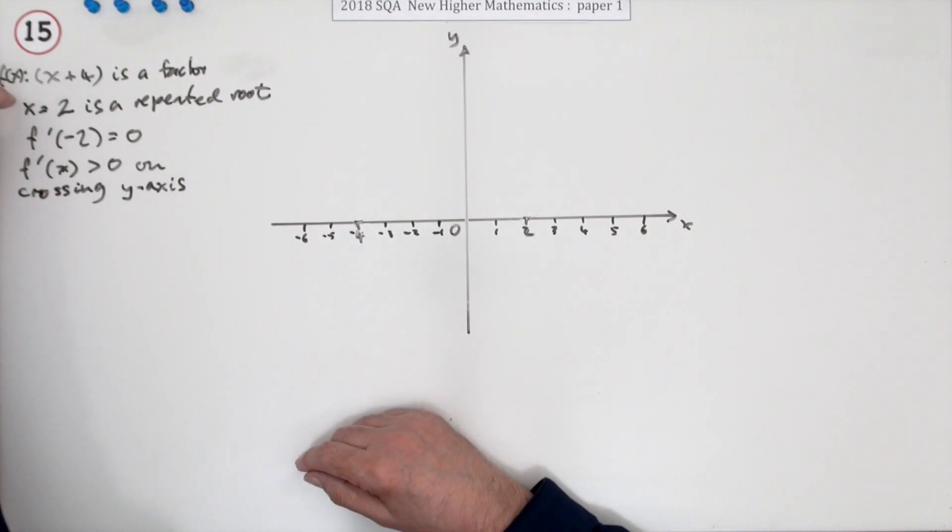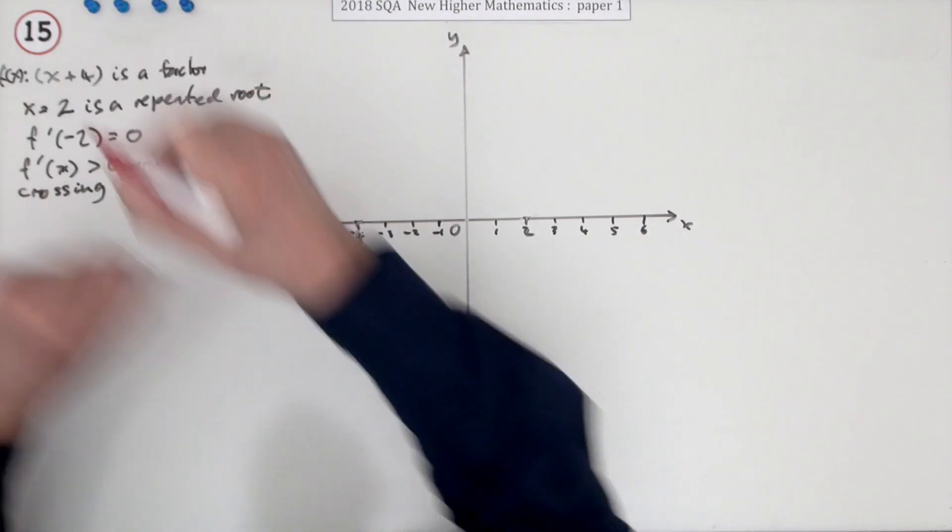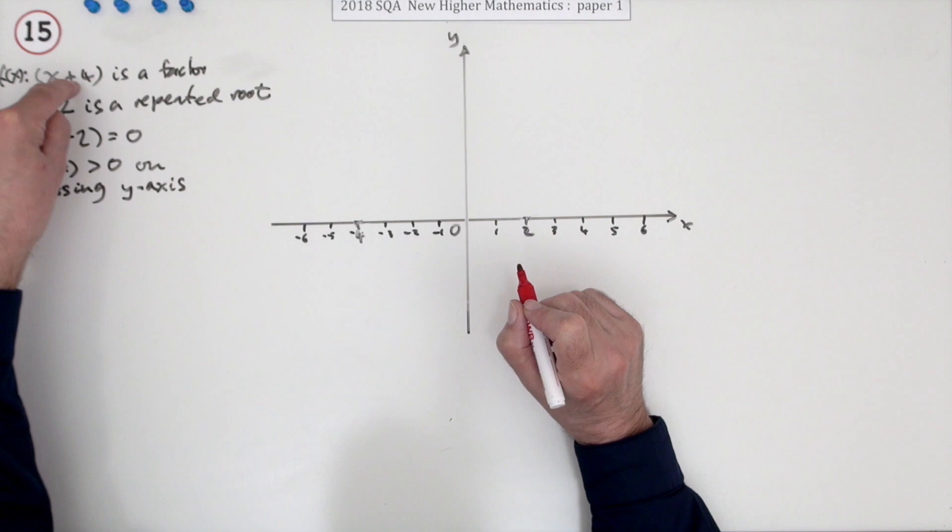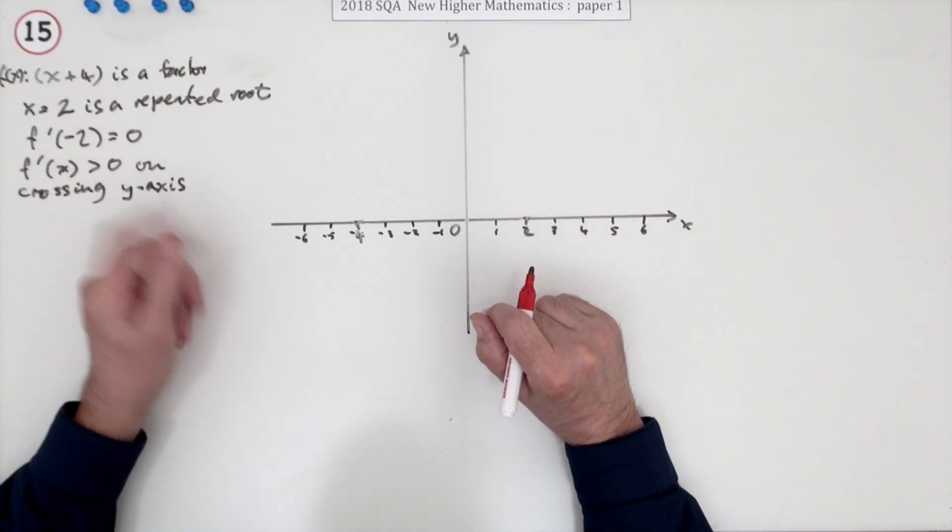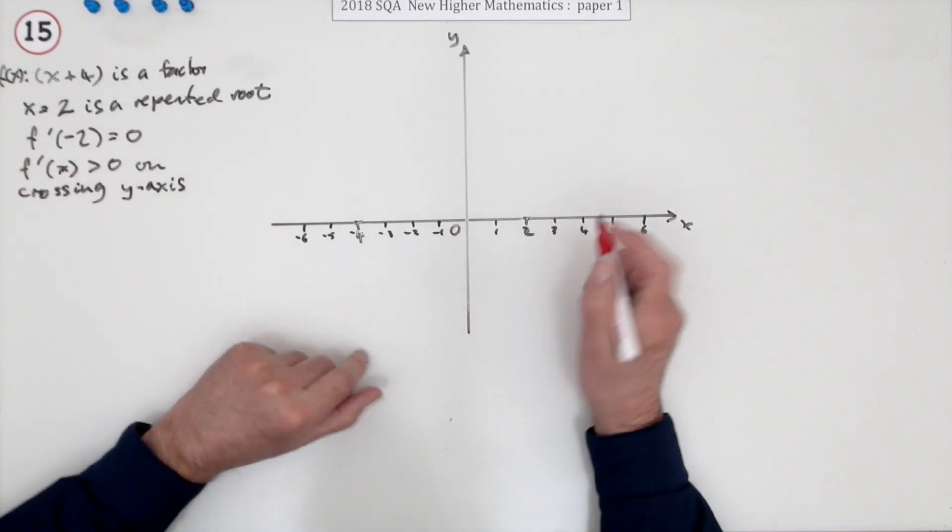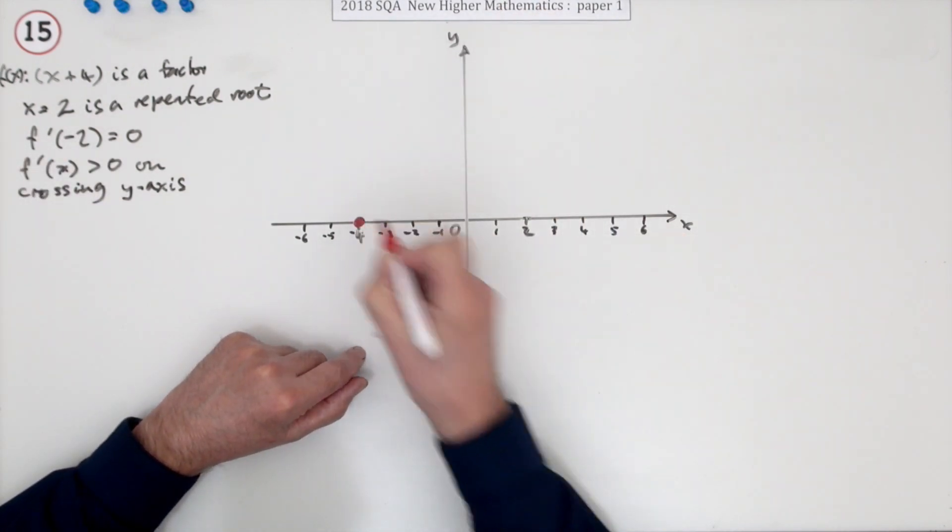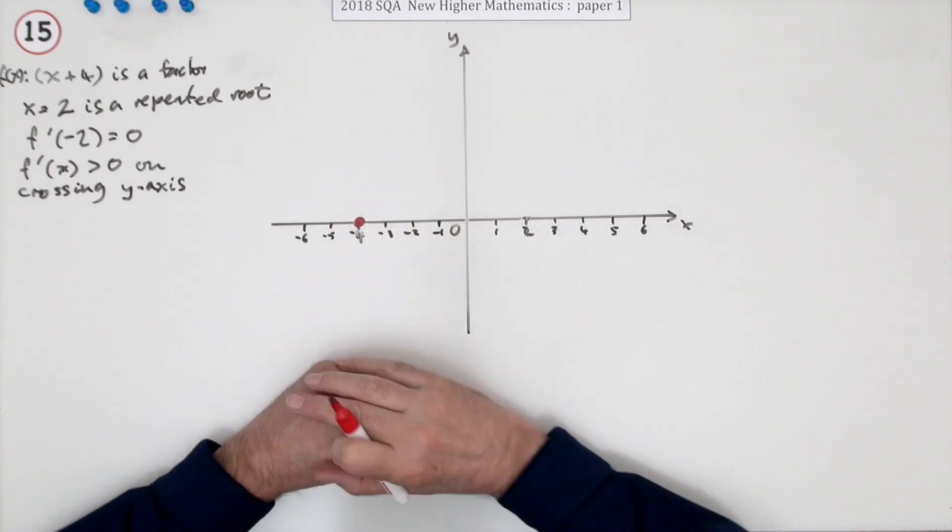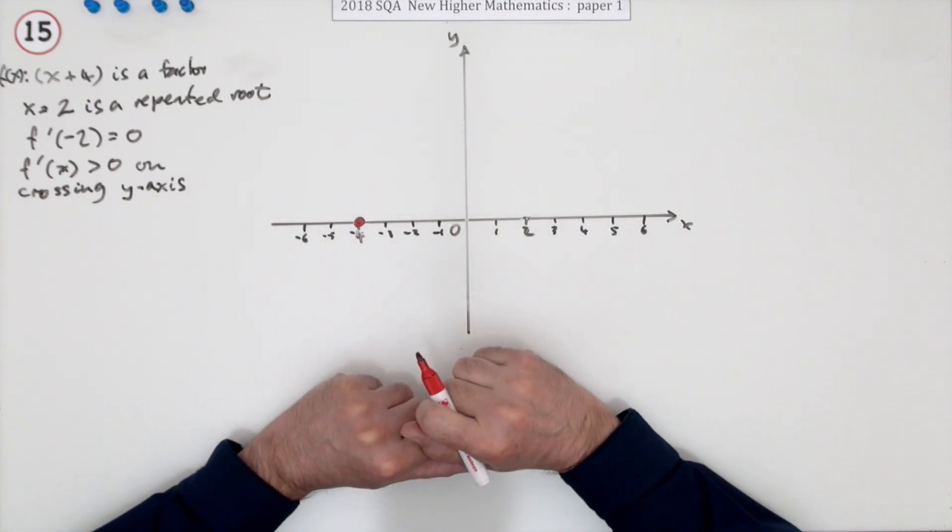So the first fact is this: x plus 4 is a factor. Well, if x plus 4 is a factor, that means x equals negative 4 is a root, or negative 4 is a zero of the function, meaning it gives the answer zero. So when x is negative 4, the answer is zero. I know it's a bit of a big blob, but it's just to make it stand out.